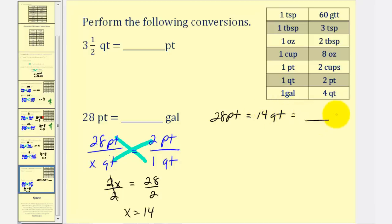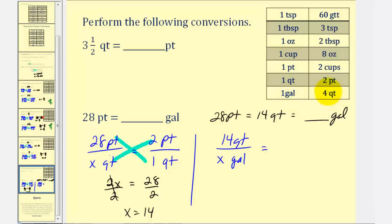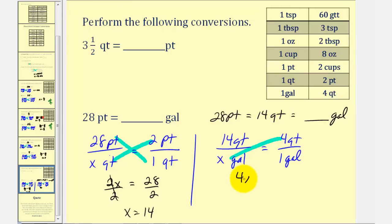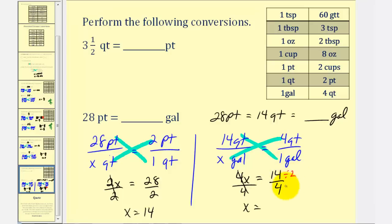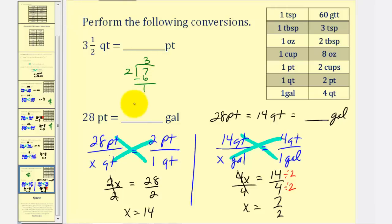And now we'll convert the quarts to gallons. We'll have fourteen quarts to x number of gallons must equal — one gallon equals four quarts, and quarts must go on top — so four quarts to one gallon. Cross multiply: x times four, that'd be four x, equals fourteen times one, that's fourteen. Divide both sides by four. We have x equals fourteen-fourths, which simplifies — common factor of two — so x equals seven-halves. Seven divided by two: there are three twos in seven, three times two is six, remainder one. So seven-halves equals three and one-half, or three point five.